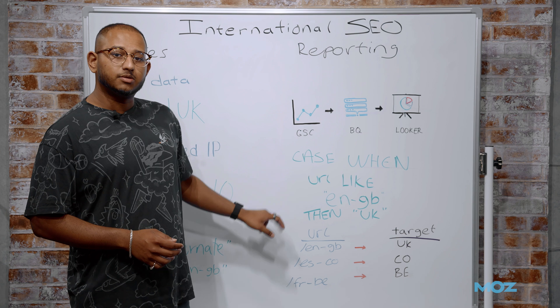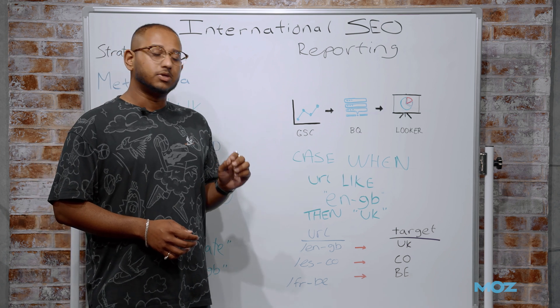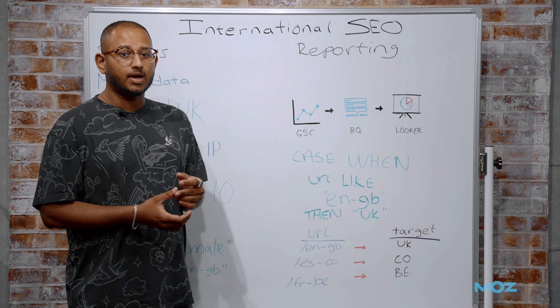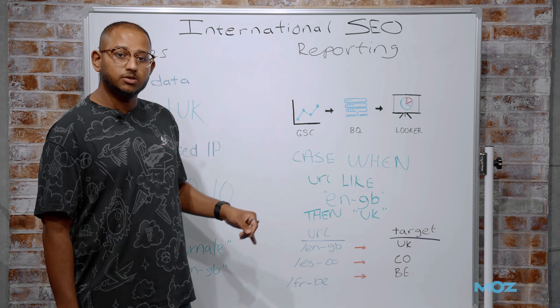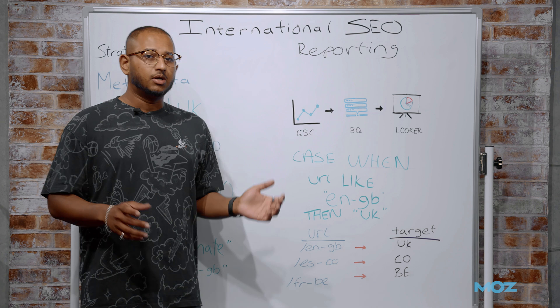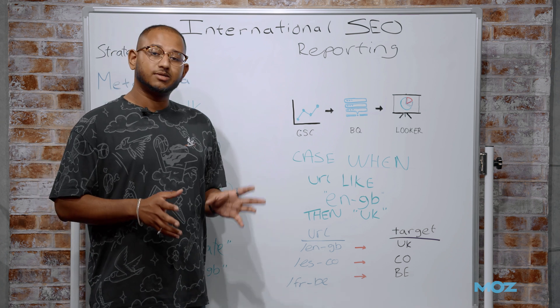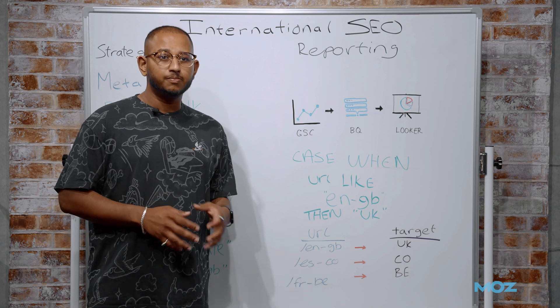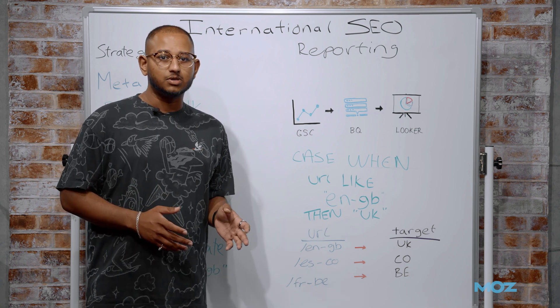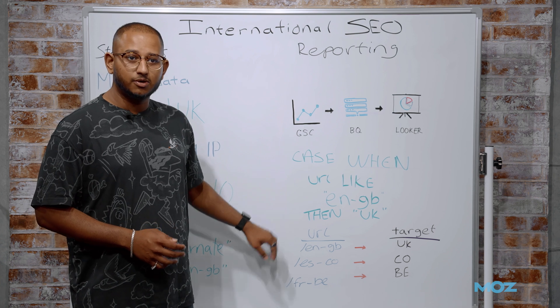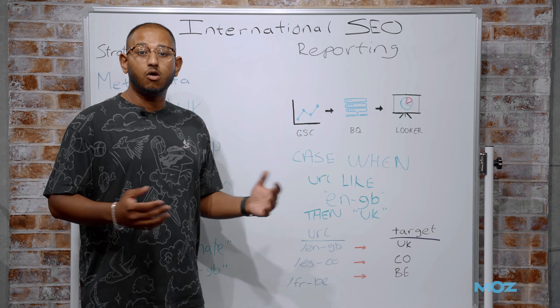What we then do with this target country is we run another case statement to compare it to the actual country that the user landed from. And again, that's data that comes straight from Search Console. You need to do a little bit of manipulation of that data, just because Google provides the data in alpha three country codes. So you need to use a lookup table. But really, that's simple to get. And once you've understood this case statement, you've understood essentially the whole report.